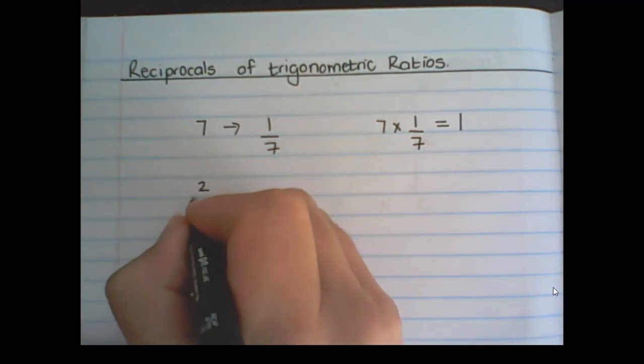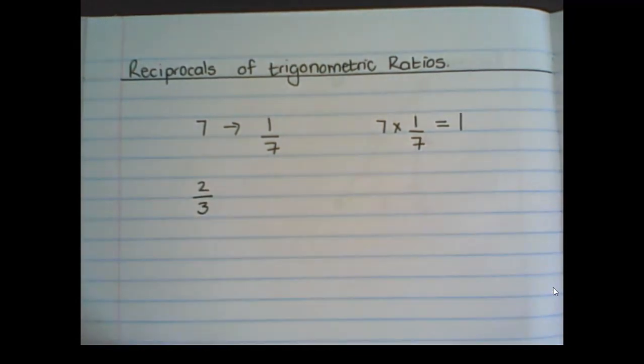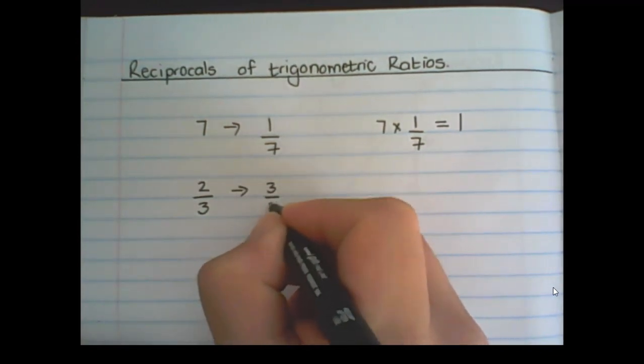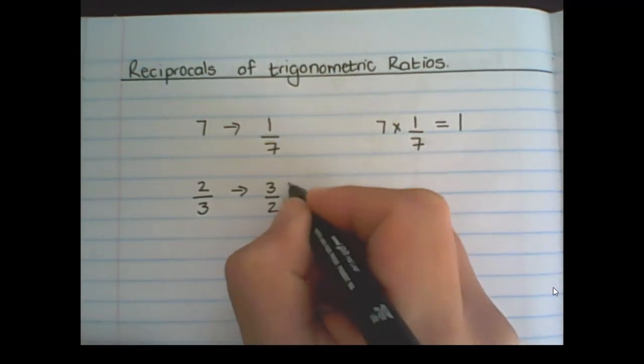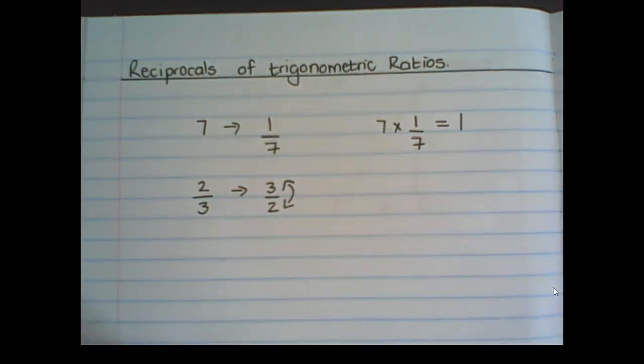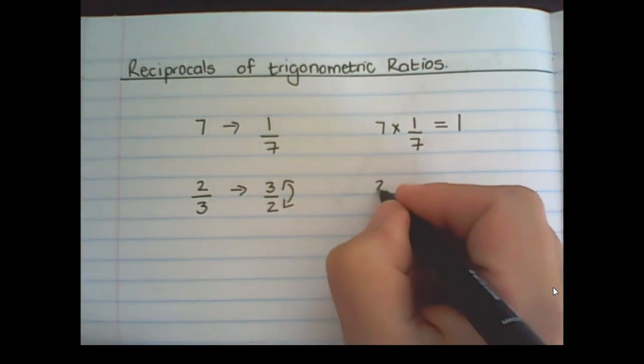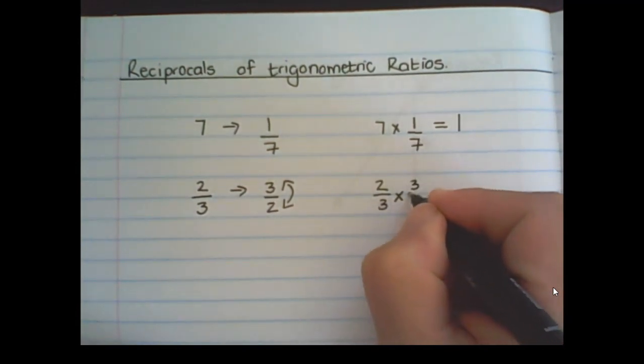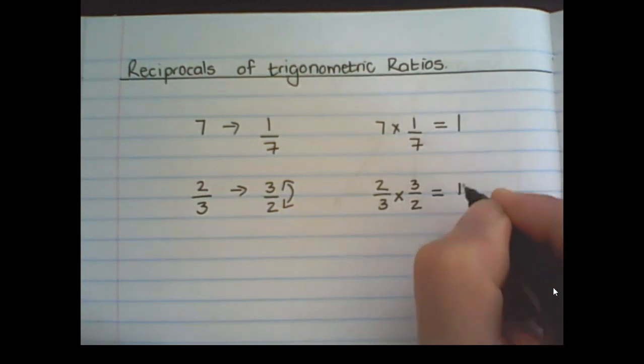For example 2 over 3. Its reciprocal is 3 over 2. So the numerator and denominator exchange positions, and if I multiply them with each other I will get 1.